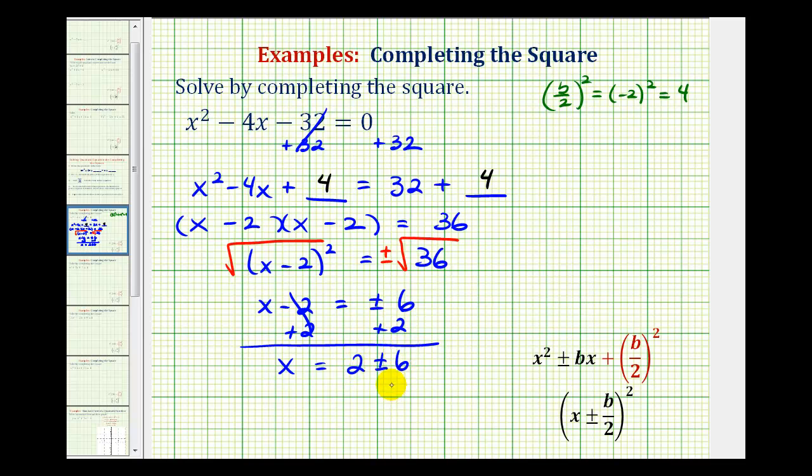Now we should list the two solutions by performing this addition and subtraction. One solution is x equals 2 plus 6, which would be 8. Or x could equal 2 minus 6, which is equal to negative 4.